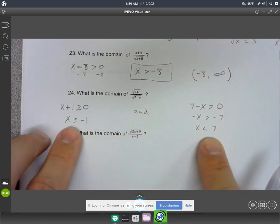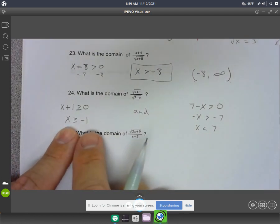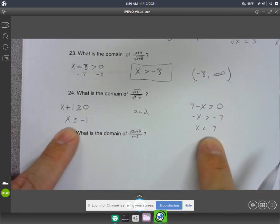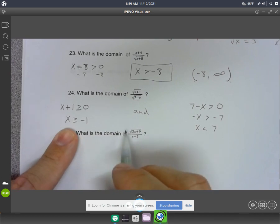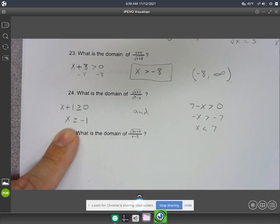Now, both of these things have to be true. x has to be bigger than this, and it has to be less than this. So you actually have a small window of solutions on this. It's got to be between negative 1 and positive 7. Those are the only numbers you can plug in for x here.